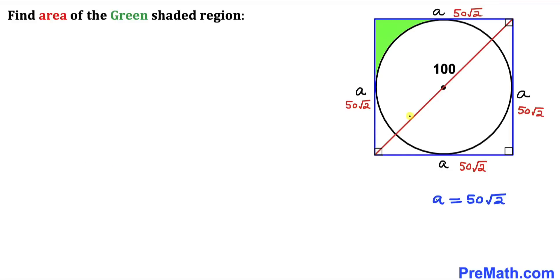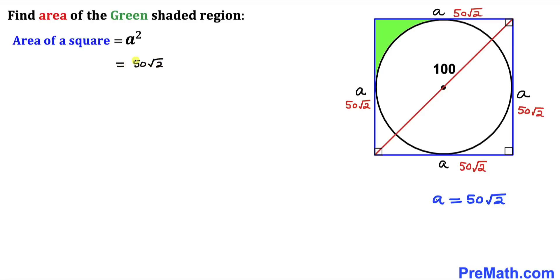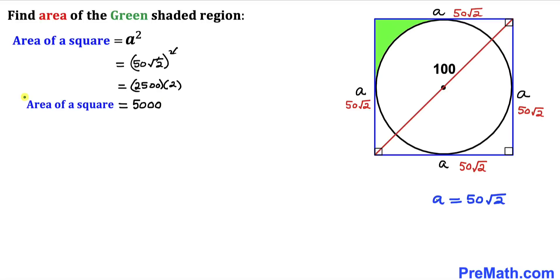Here's our next step — let's calculate the area of the square. Recalling the formula, Area = a², where a = 50√2. Filling in: Area = (50√2)² = 50² × 2 = 2500 × 2 = 5000. So the area of this square is 5000 square units.